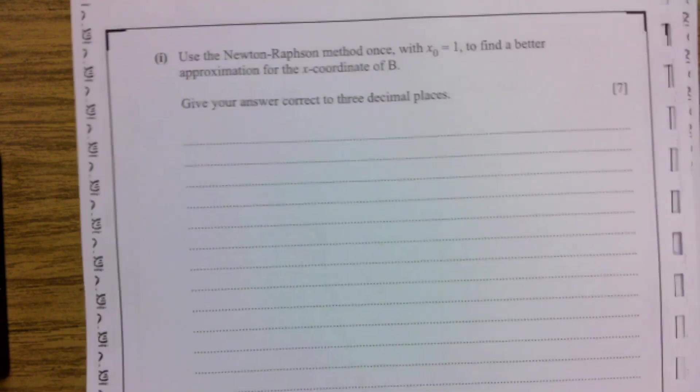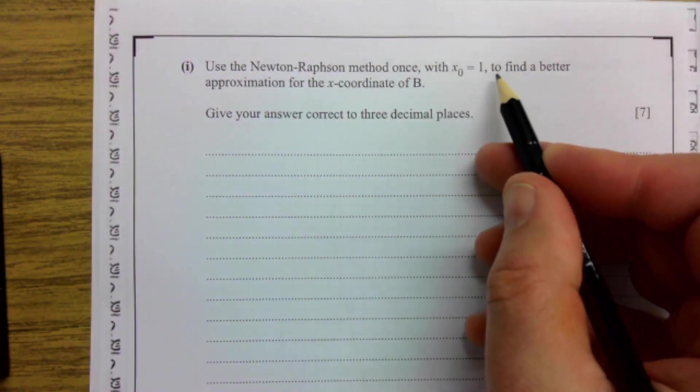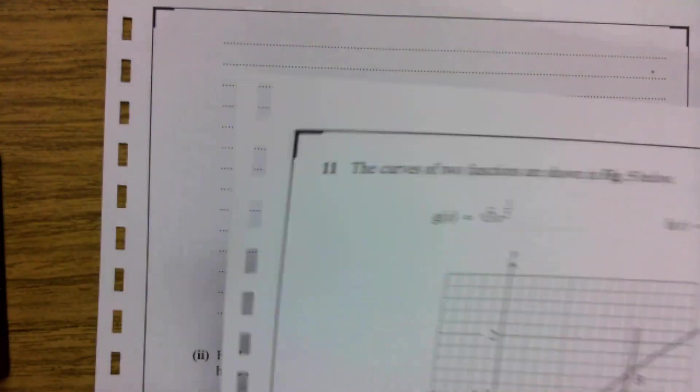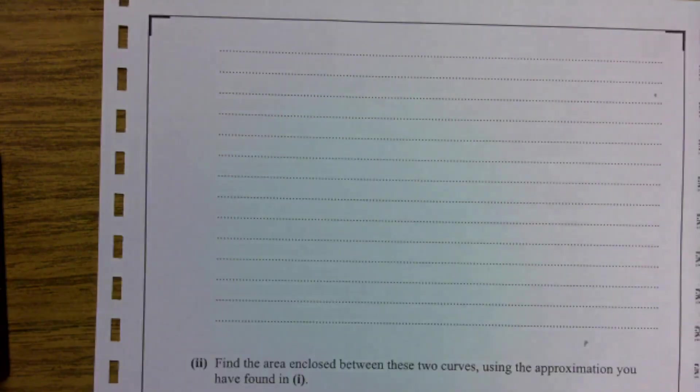And then it looks at part 1 to see what we're asked. It says use Newton-Raphson method once with x₀ equal to 1 to find a better approximation for the x-coordinate at B. Give your answer correct to three decimal places. If we're trying to work out where two lines cross each other, we need to put the two things equal to each other. So that's our first step here.